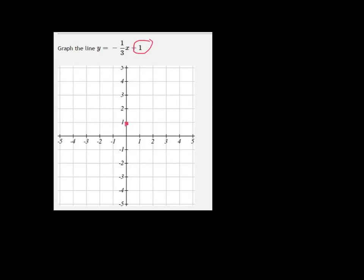And then for your second point, use the slope. The slope is negative one over three. So to get to your next point, you're going to go down one.